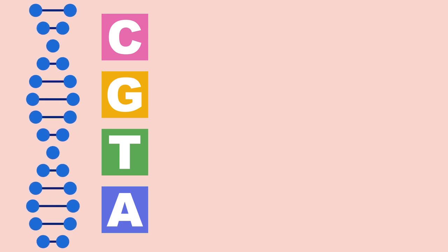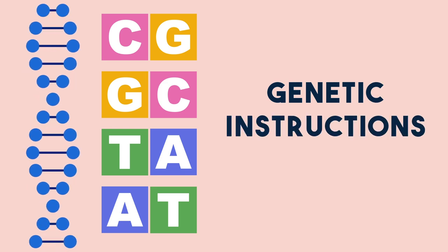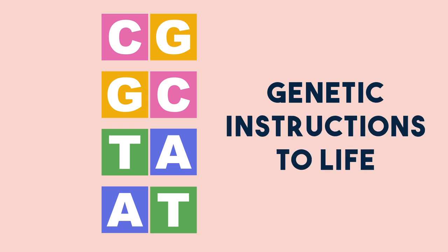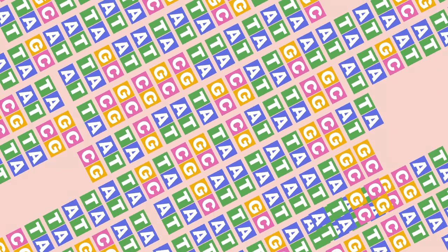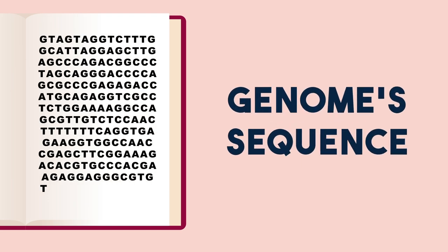These building blocks can be thought of as letters that pair up with each other and make up the genetic instructions to life. Three billion pairs make up all our DNA, which is also called our genome. The precise order of these letters is called the genome's sequence.